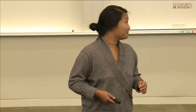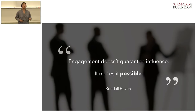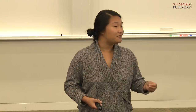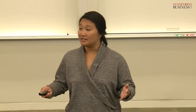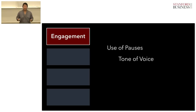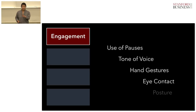The first concept is engagement. Engagement does not necessarily guarantee influence automatically, but it certainly is the first step to making it possible. Engagement is our ability to physically show up — our attentive focus on making sure that when we're connecting with our listeners, we're physically being engaged with them, no matter how complex or simple the story is. We can physically engage through the use of pauses, tone of voice, hand gesturing, eye contact, and posture.